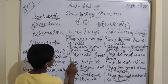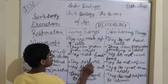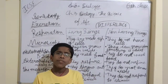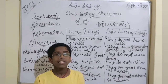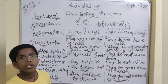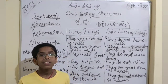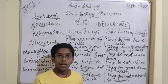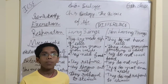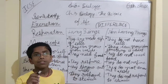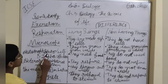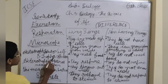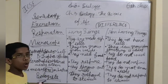Our next topic is: living beings need food, and non-living things do not need food. Food is the main thing through which living beings can survive. Some organisms like green plants make their own food and are known as autotrophs. Auto means self, and trophos means feeder — so autotrophs means self-feeders.